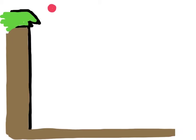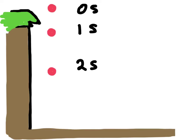Constant acceleration means that the object is going to change its velocity by the same amount each second. For example, if you were to drop a ball off a cliff and take a picture of it every second, we might see something like this: at time zero the ball is at the starting position, after one second it has moved further, and after two seconds it has moved even further.